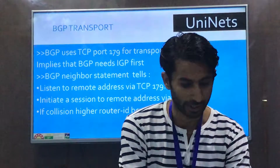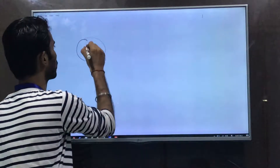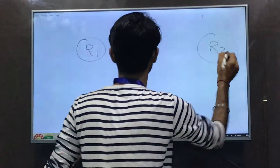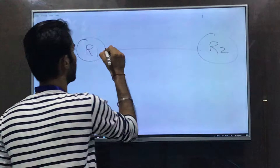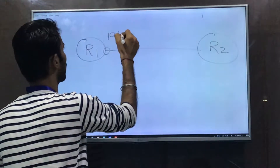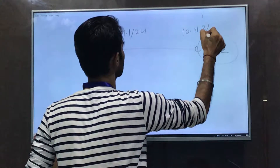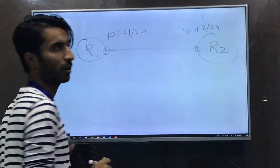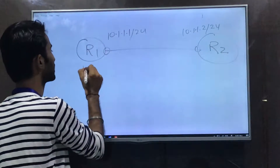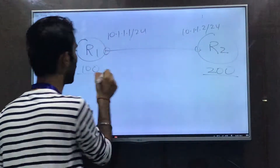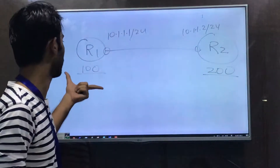On the whiteboard, we have two routers: Router 1 and Router 2. Router 1 has IP 10.1.1.1/24 and Router 2 has IP 10.1.1.2/24. Router 1 is in AS-100 and Router 2 is in AS-200. We are going to start the BGP process for AS-100 on R1 and AS-200 on R2.